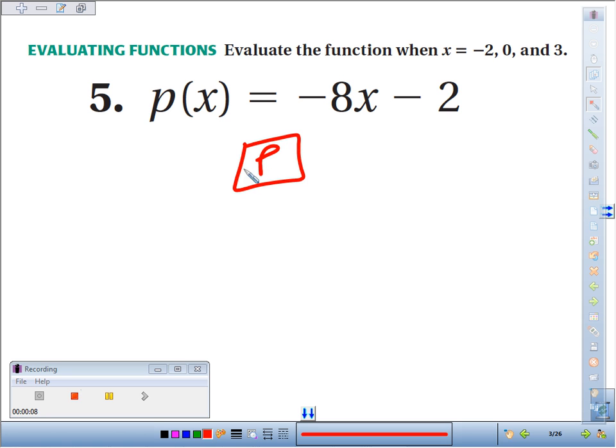So p is kind of like a machine. You plug the x into the machine, p takes x, it transforms it by multiplying it by negative 8 and then subtracting 2.